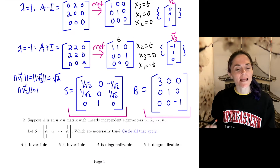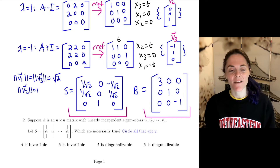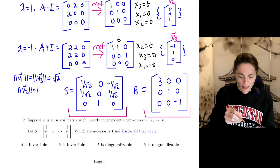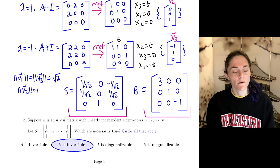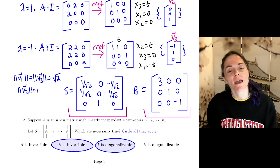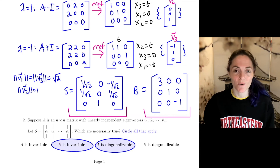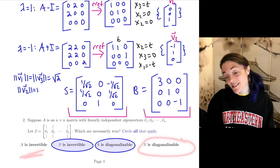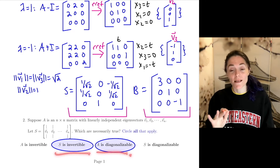This is a circle-all-that-apply question about diagonalization. A is n by n with n linearly independent eigenvectors, and S is the matrix of those eigenvectors. S has linearly independent columns, so S is definitely invertible. And because we have this S, A is diagonalizable. But we don't know if A is invertible — it depends on whether 0 is an eigenvalue or not. Similarly, S being diagonalizable is unknown; S is just some invertible matrix. So we can only circle those two with certainty.